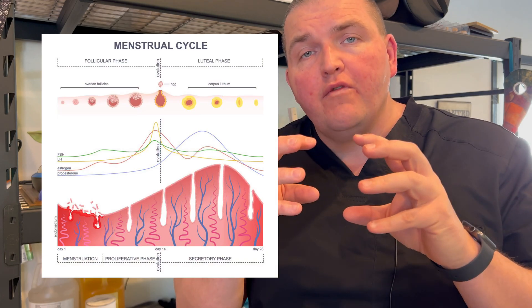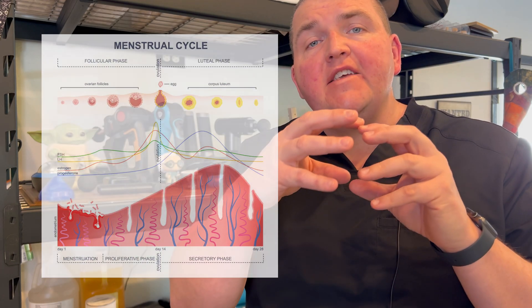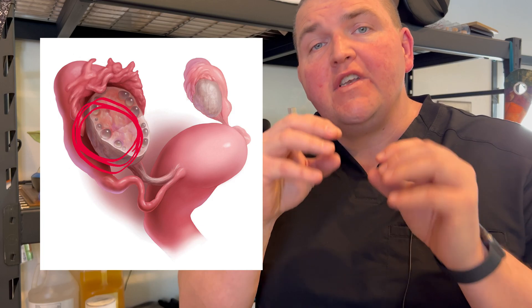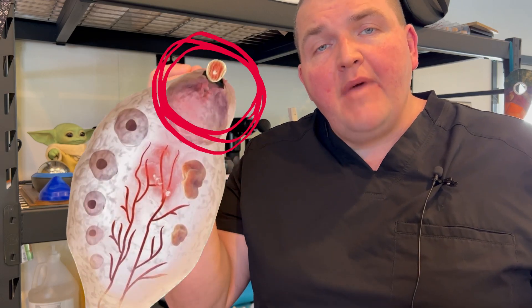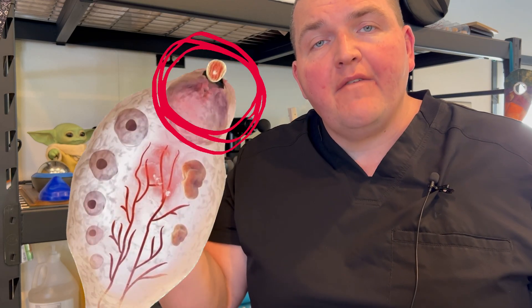To completely understand PCOS, I think it's important that we establish what a normal cycle looks like. There are a pair of hormones from the brain called LH and FSH, which are sent out gradually and in waves to the ovary. At the ovary, they stimulate several different cysts which develop into follicles, and eventually one of them makes it all the way to the point of ovulation.